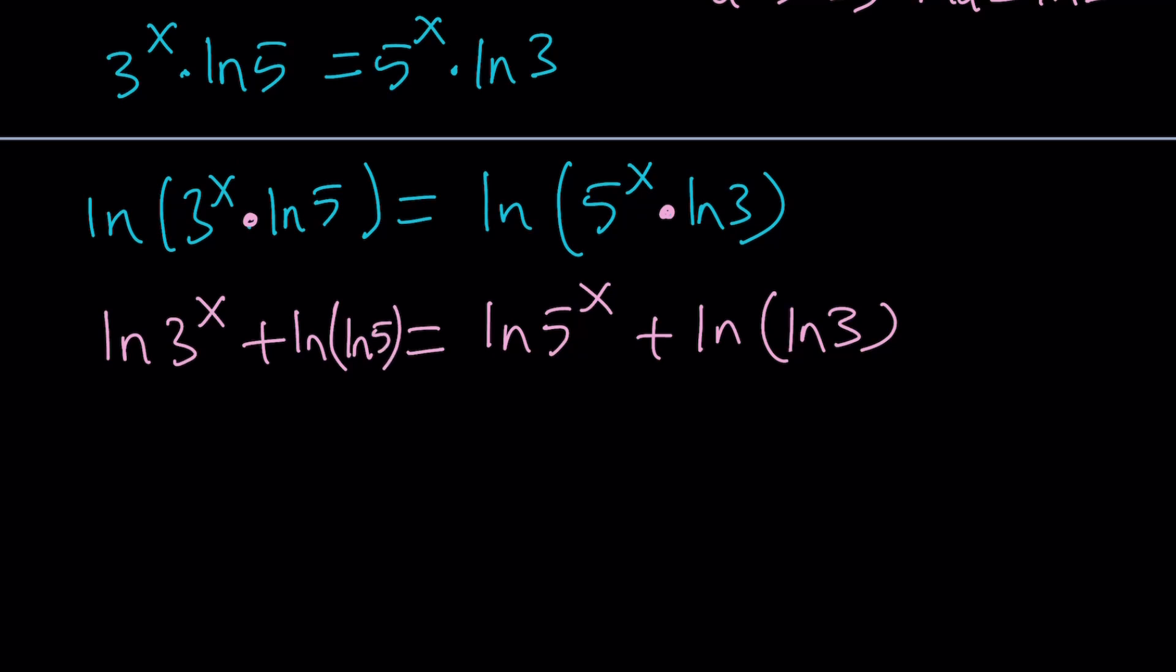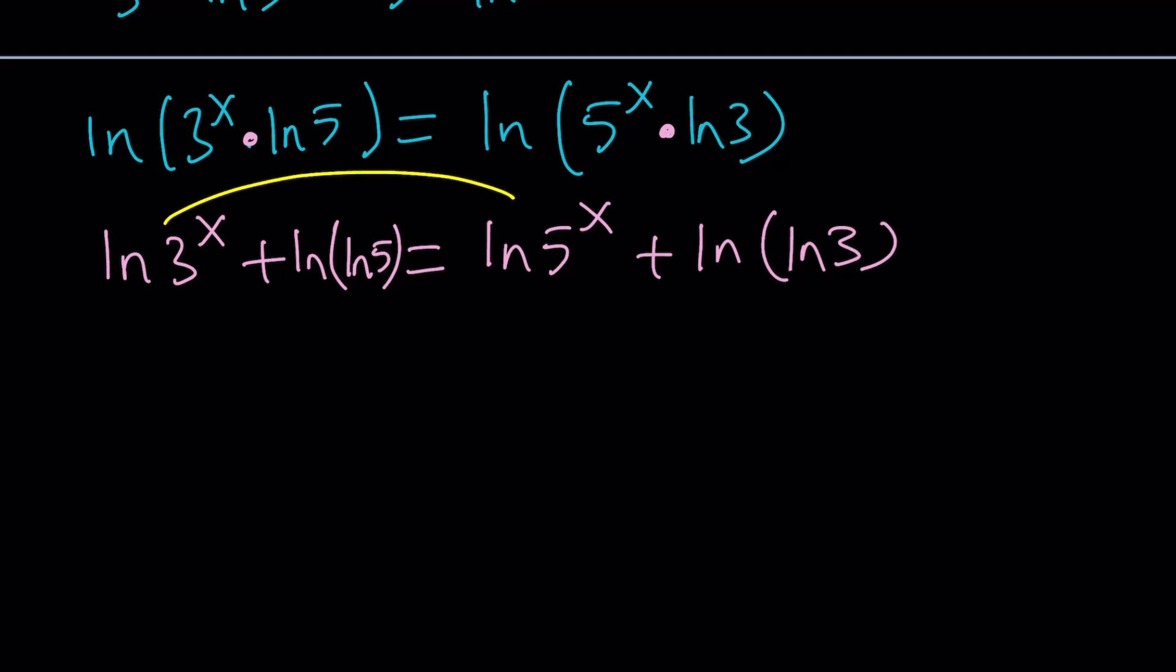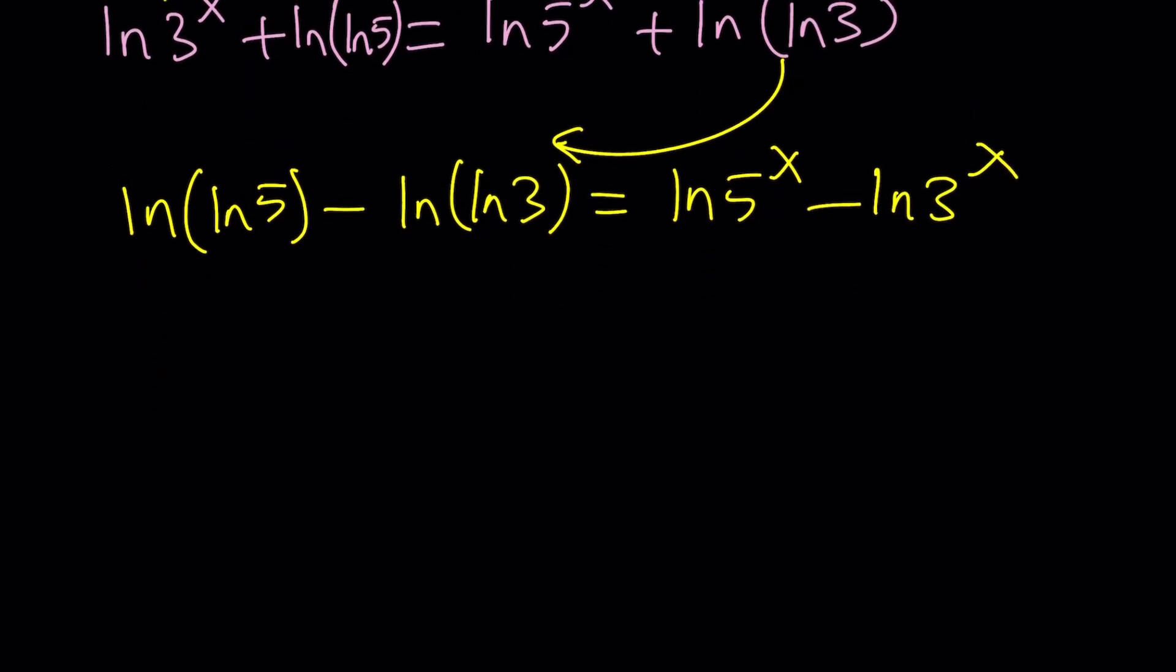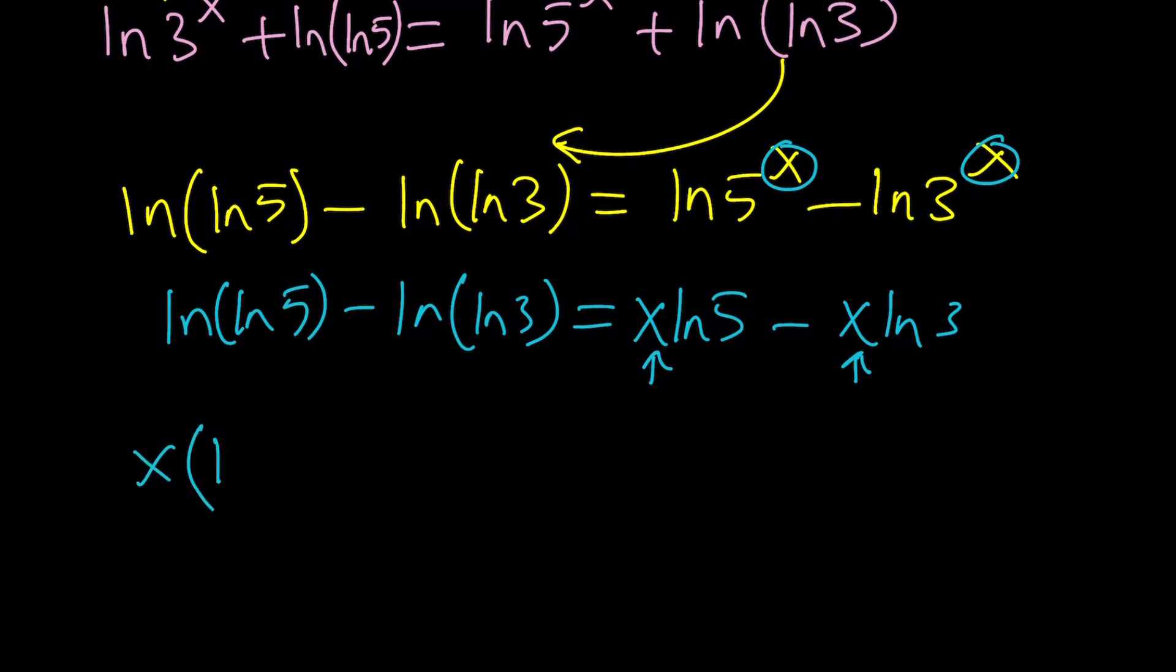All right. Cool. Now, what do you do with this? I do need to solve for x, so I kind of need to put the variables together. Let's go ahead and subtract this from both sides and subtract this from both sides. So in other words, we can go ahead and bring the ln ln 3 to the left-hand side and bring the ln 3 to the x to the right-hand side so that the variables are together and the constants are together. Make sense?